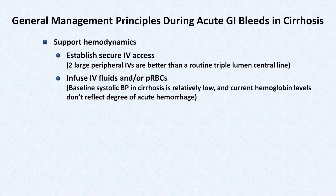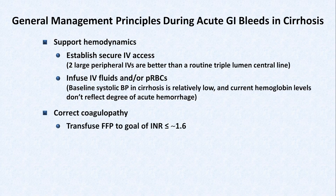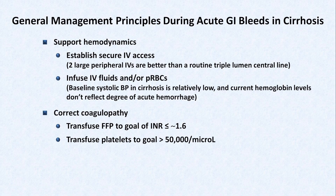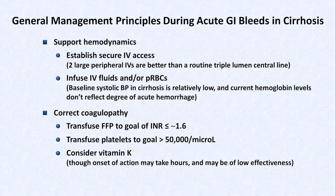In addition to supporting hemodynamics, you'll want to correct any underlying coagulopathy. This means transfusing fresh frozen plasma, or FFP, to bring down the INR. There is no specific universal goal INR, but around 1.6 seems to be a relatively typical goal of most GI and critical care docs. Transfuse platelets to a goal of above 50,000. You can consider administering vitamin K, but realize that the onset of action may take hours, and it may be of low effectiveness if the patient is not actually vitamin K deficient.